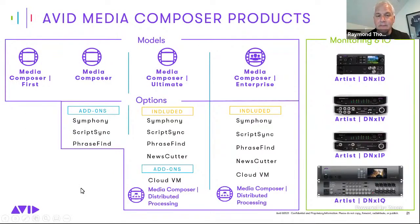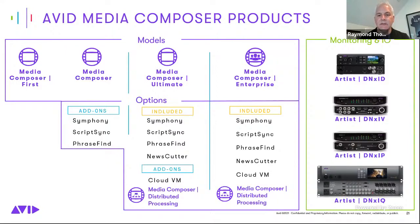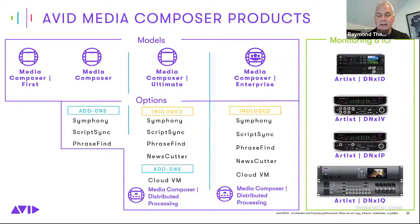The Media Composer lineup ranges from Media Composer First — the free option for those who want to learn — all the way up to Media Composer Enterprise, which includes everything Avid offers: Symphony, ScriptSync, PhraseFind, NewsCutter, and Cloud VM. There are also various monitoring options for on-prem use, and you can go SDI out into a Keto and send SRT for monitoring at home.